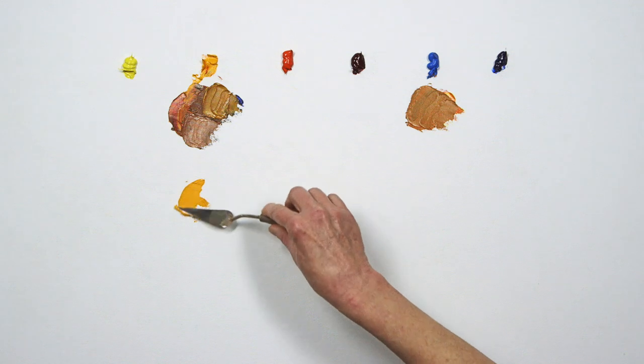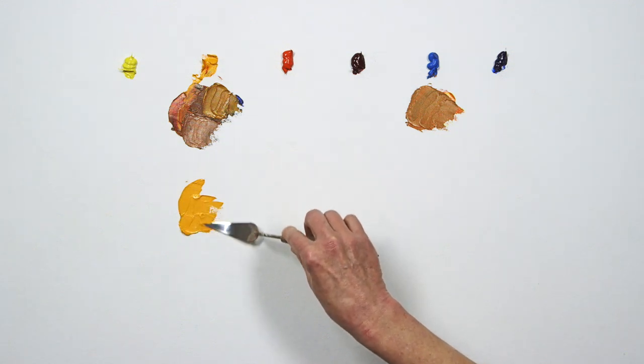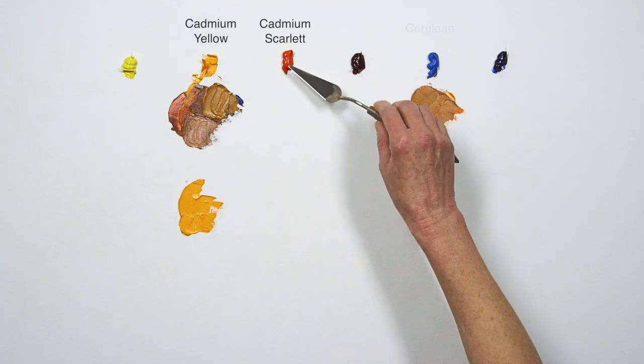There are many permutations of brown within this six color palette. I can add Cadmium Yellow to Cadmium Scarlet and add Cerulean.